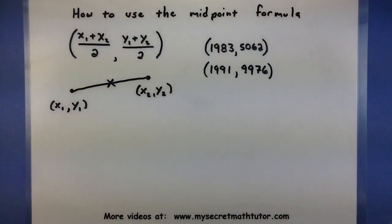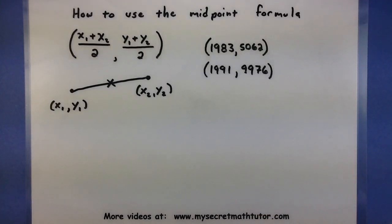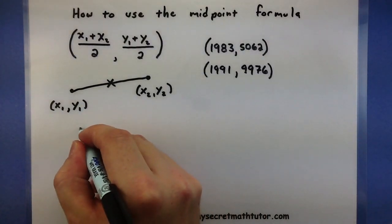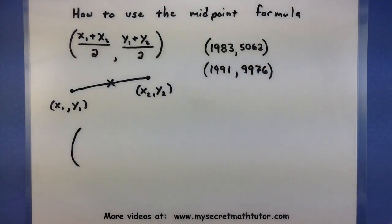To see this formula in action real quick, we're going to take a couple of points and then find the midpoint in between the two. To start off, I'll take both these x values, add them together, and see what we get.